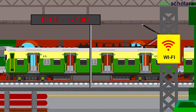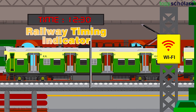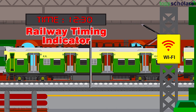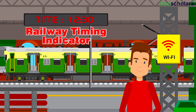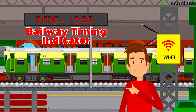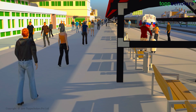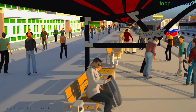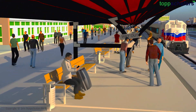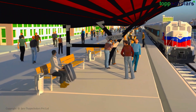You might have visited a railway platform and there you might have seen a railway timing indicator. Now you might ask how this topic is related to constants and variables. Let us understand this. We are going to a railway platform for four consecutive days.